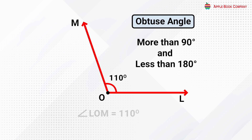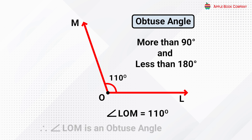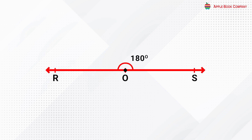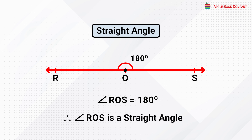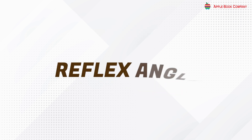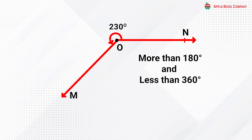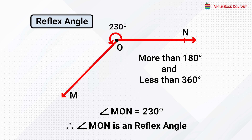In the given figure, angle AOB is equal to 90 degrees; therefore angle AOB is a right angle. Obtuse angle example: angle LOM is equal to 110 degrees, which is more than 90 degrees but less than 180 degrees; therefore angle LOM is an obtuse angle. Straight angle: an angle whose measure is 180 degrees. In the given figure, angle ROS is equal to 180 degrees; therefore angle ROS is a straight angle. Reflex angle: an angle whose measure is more than 180 degrees and less than 360 degrees. In the given figure, angle MON is equal to 230 degrees; therefore angle MON is a reflex angle.